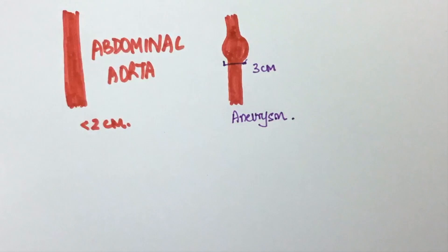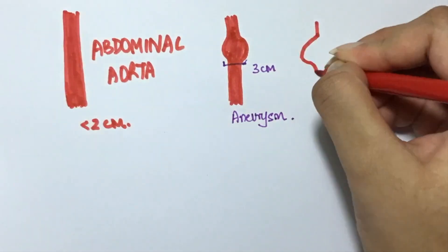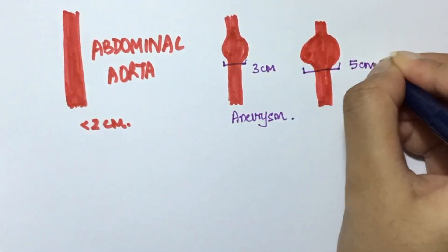This is most often located below the origin of the renal artery. Atherosclerosis and smoking are strong risk factors for this. The chances of rupture are high if the diameter is greater than 5 cm.